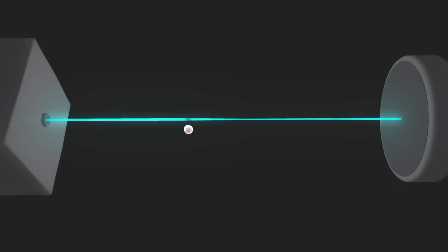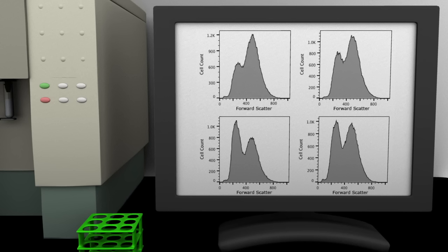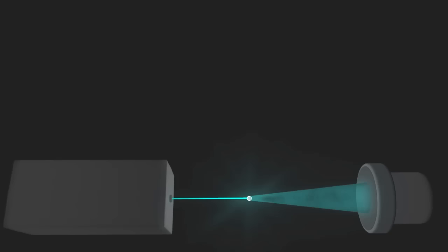The detector converts the scattered light into a voltage pulse, which is directly proportional to the amount of forward scattered light. The computer converts these data into a histogram plot with the amount of forward scattered light on the x-axis and the number of cells on the y-axis.